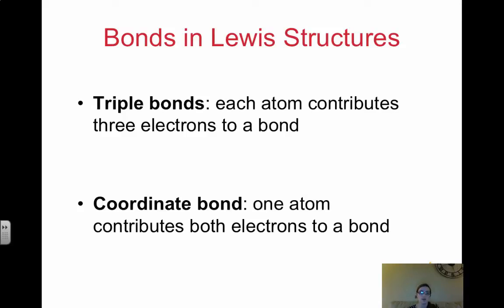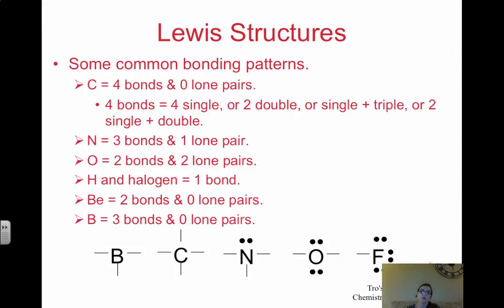And then we have triple bonds when each contributes three, which means there are six electrons total. Sometimes we'll have what's called a coordinate bond. This becomes much more important later when we start talking about ligands. But coordinate bonds occur when one atom actually contributes both electrons to a bond.